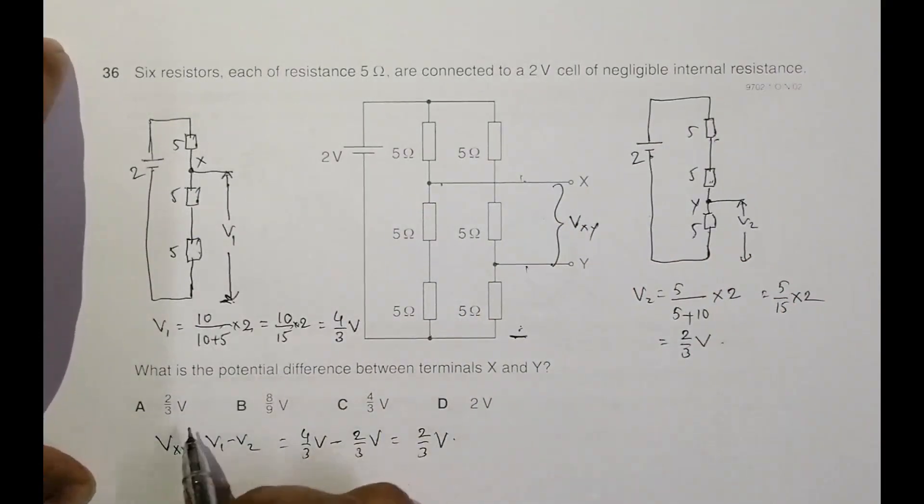Going through the answer choices, the correct answer should be choice number A. This let's look for Vxy. All right. Thank you.